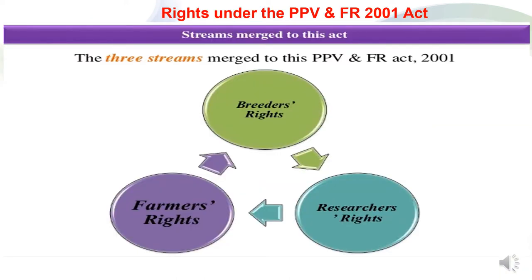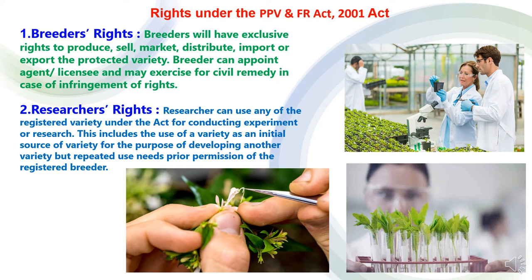The rights under the Protection of Plant Varieties and Farmers Rights Act focus on three areas: breeders' rights, researchers' rights and farmers' rights. As breeders' rights are concerned, breeders will have exclusive rights to produce, sell, market, distribute, import or export the protected variety. Breeders can appoint an agent or licensee and may exercise civil remedy in case of infringement of rights.